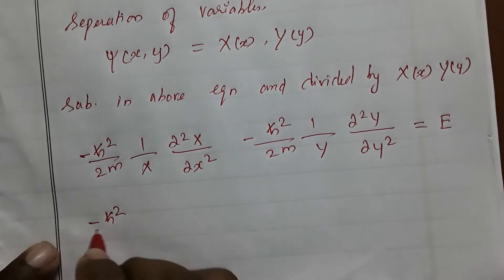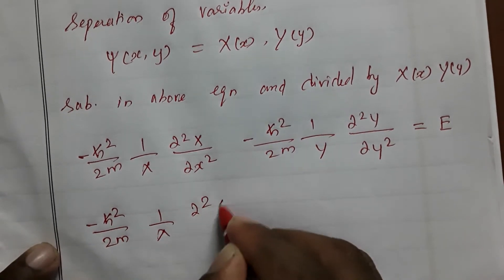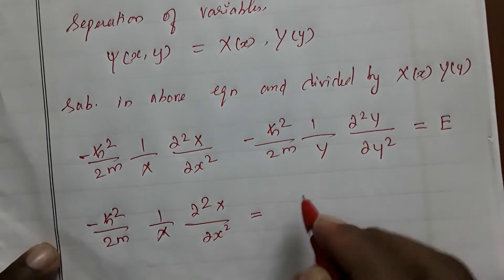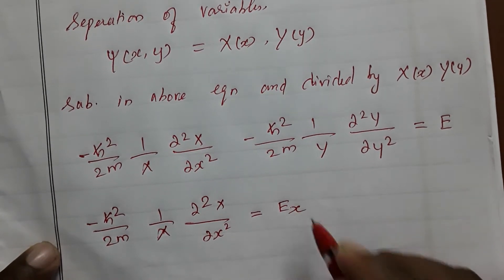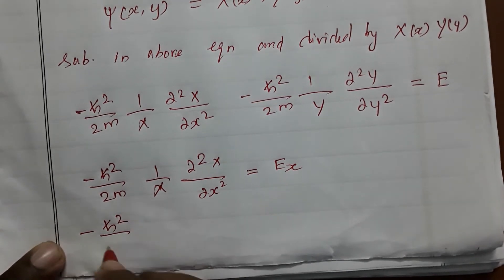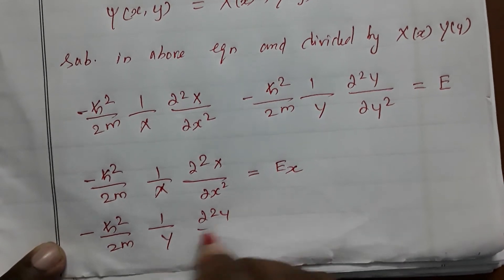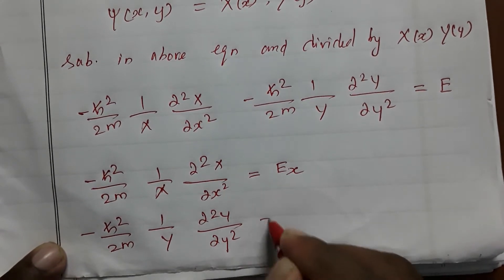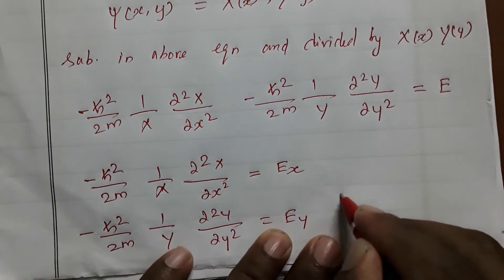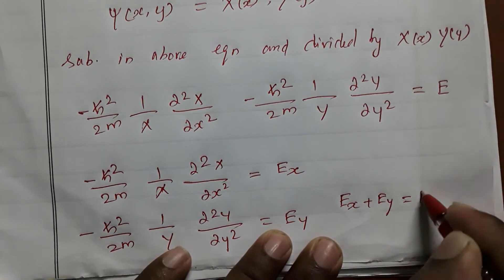Separating: −(ħ²/2m)(1/X)(d²X/dx²) = Eₓ and −(ħ²/2m)(1/Y)(d²Y/dy²) = E_y. The total energy is the sum: Eₓ + E_y = E.